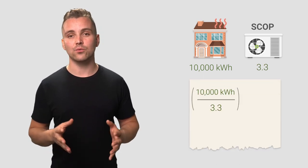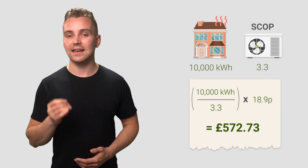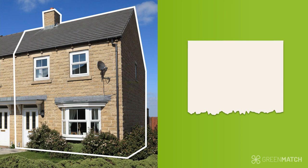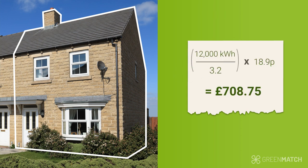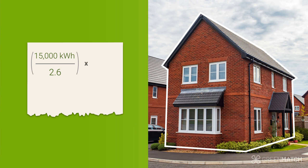For a slightly larger property such as a terraced house, the average heat requirement for a year is 10,000 kilowatt hours and the average seasonal coefficient of performance would be 3.3, giving a running cost of £572.73. Using the same formula, the running costs for a heat pump in a 3-bed semi-detached house would be £708.75, and for a large 5-bed detached house, the annual running costs would be £1,126.73.